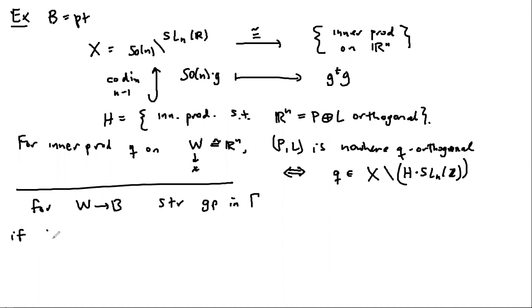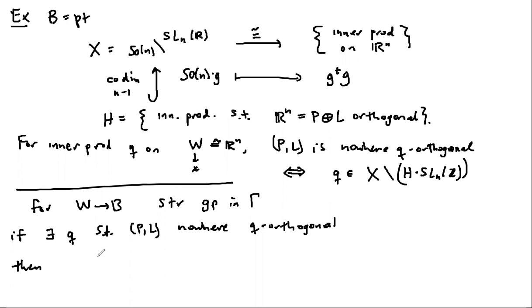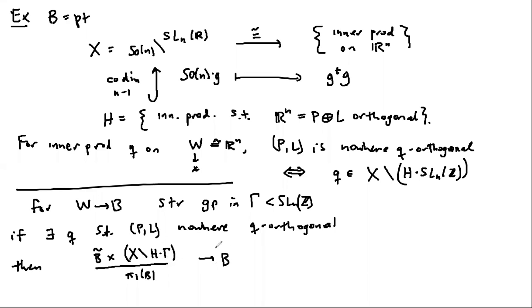If this bundle admits a fiber-wise inner product Q so that (P, L) is nowhere Q-orthogonal, then there's a section of a certain associated bundle — a bundle whose fiber is X minus the gamma-orbit of H. Choosing a section of this bundle is exactly choosing a fiber-wise inner product which is nowhere Q-orthogonal.